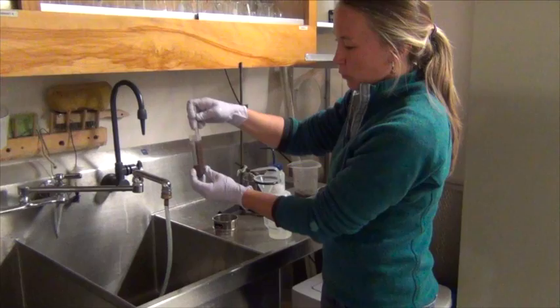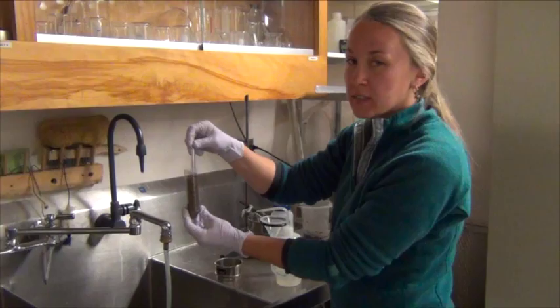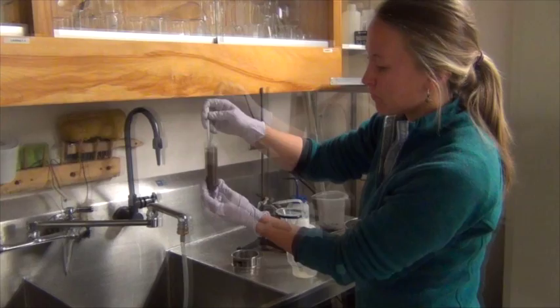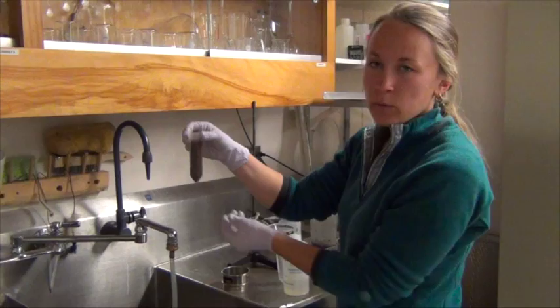We stir to re-suspend the pellet. The sugar solution we are using is at the same density of the invertebrates' bodies, so this will cause them to float in the sugar solution. Once the soil pellet has been re-suspended, we're ready to centrifuge again.